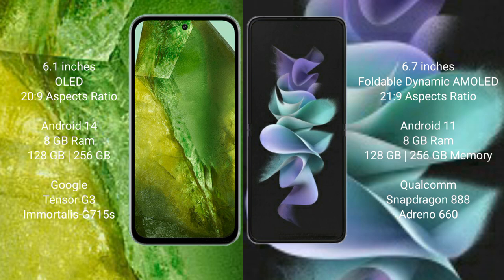Google Pixel 8a runs on the Android 14 operating system. It comes with 8GB RAM and 128GB or 256GB internal storage, Google Tensor G3 processor, and Adreno 740 GPU.